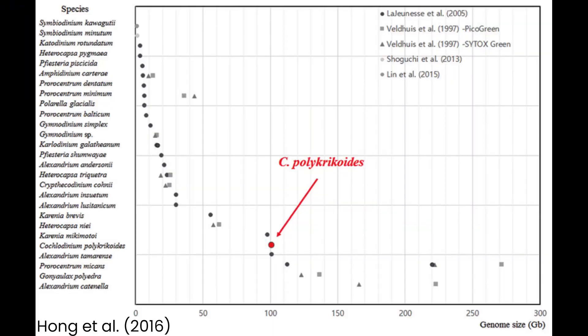Many dinoflagellates also have very large nuclear genomes, some as big as 215 gigabases — more than 60 times the size of a human's. Alternatively, their mitochondria, along with their sister the apicomplexans, which we'll discuss next, are much smaller, with only 6,000 base pairs, compared to the 16,000 in most animals.